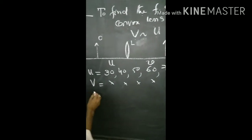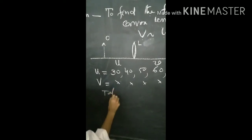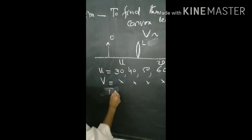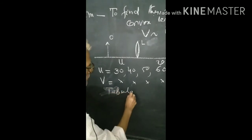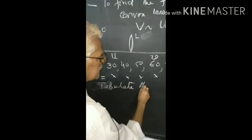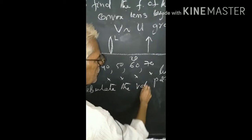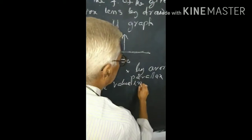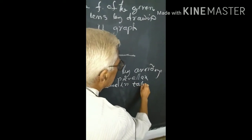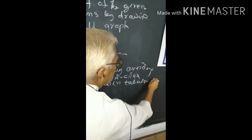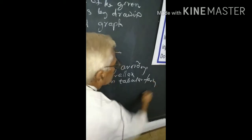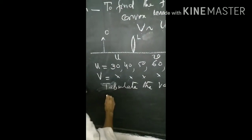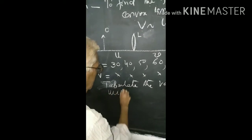Then take the observation, tabulate the variation. Calculate the values in tabular form with units.